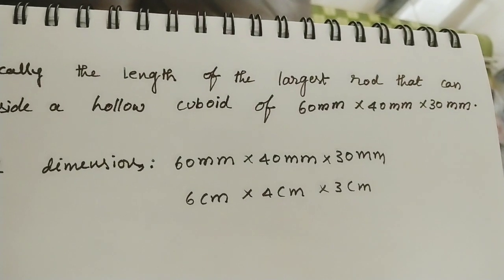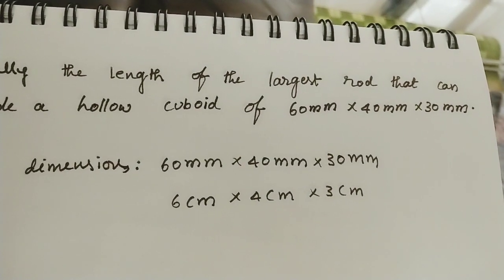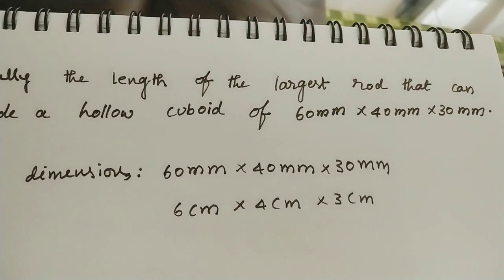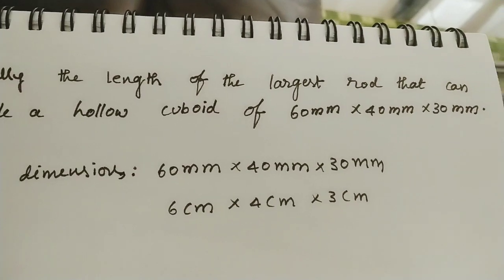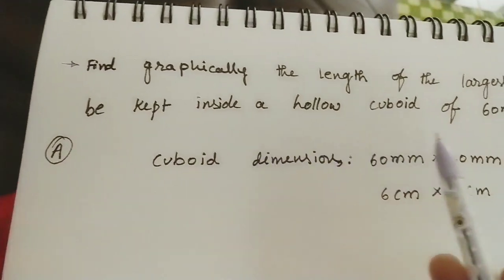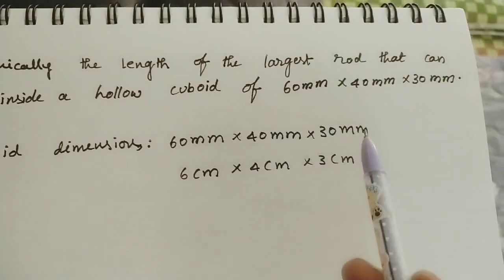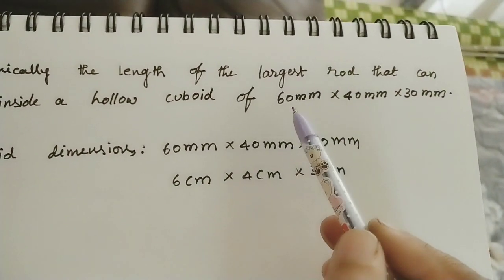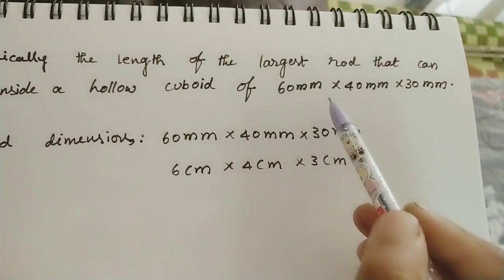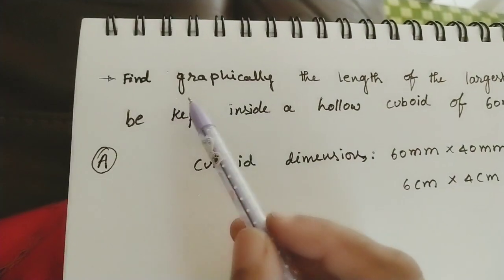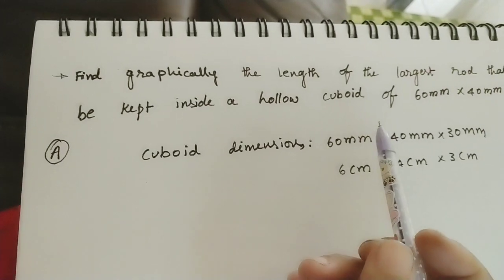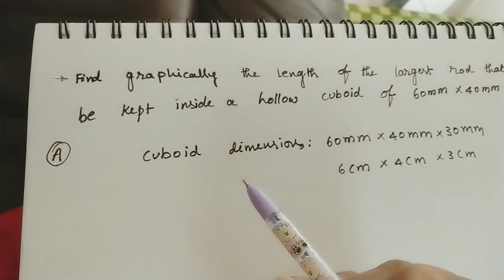Hi friends, welcome to my channel. In today's class we will discuss one of the projections of straight lines problems. We can call it a room problem also. Here instead of a room, a cuboid has been given with its dimensions. Let us take the problem and then we will do the projections.